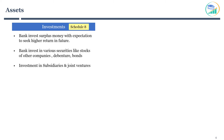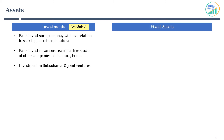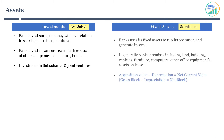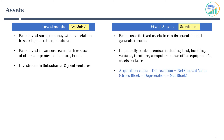The next line item is fixed assets. You can review Schedule 10 to understand the details of fixed assets and how they are recorded on the balance sheet. Banks use fixed assets to run their operations and generate income. These generally include bank premises, land, buildings, vehicles, furniture, computers, other office equipment, and assets on lease. All fixed assets should be depreciated over their useful life.